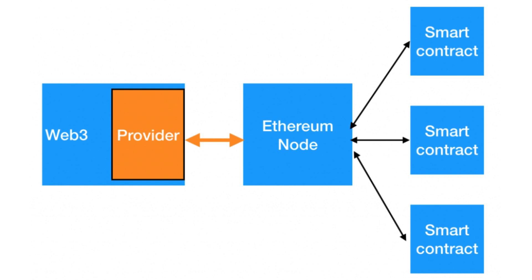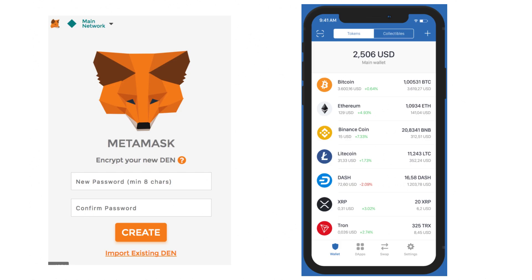So you might wonder, why do we have such a complex design? Well, the reason is flexibility. We don't want to impose any constraint on how the user will connect to the blockchain. So by having this design, the user can decide which wallet they're going to use.